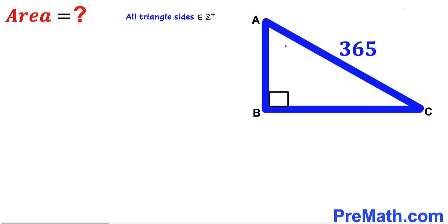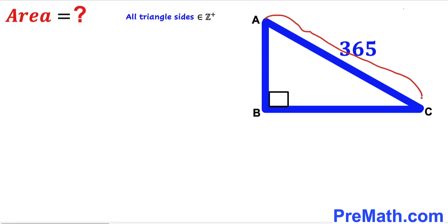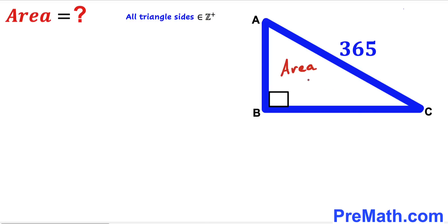Welcome to pre-math. In this video we have got a right triangle ABC as you can see in the given diagram, such that the hypotenuse of this triangle is 365 units. Furthermore, bear in mind that all the sides of this triangle are going to be positive integers, and our task is to calculate the area of triangle ABC.